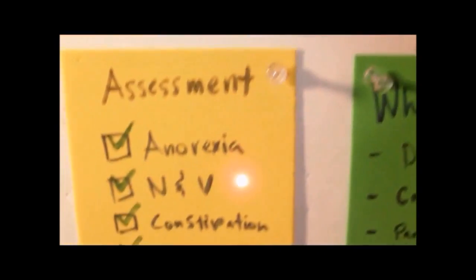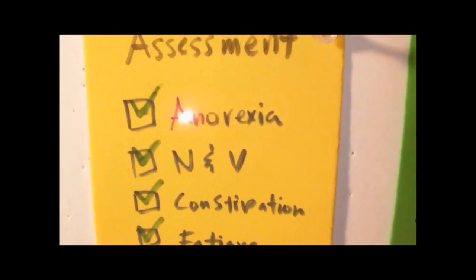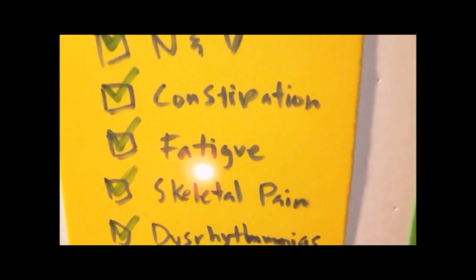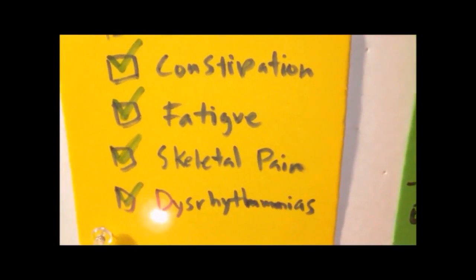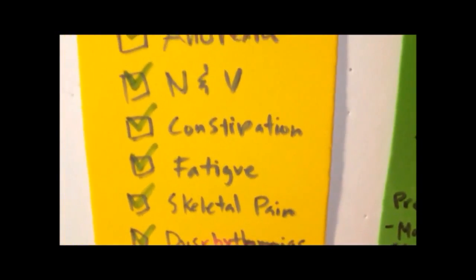So what do we see in these patients? We will see signs and symptoms that are manifested by hypercalcemia, such as anorexia, nausea and vomiting. There would be constipation, the patient would be fatigued, would be weak. There would also be skeletal pain due to the osteoporosis.